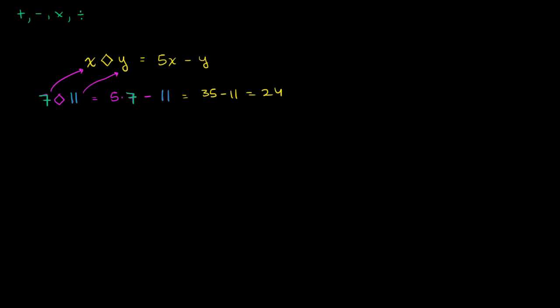We can define other things. We can define something crazy like, let me define a star b. Let's say that that is the same thing as a over a plus b.